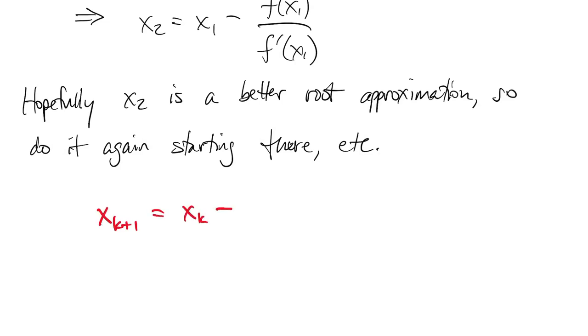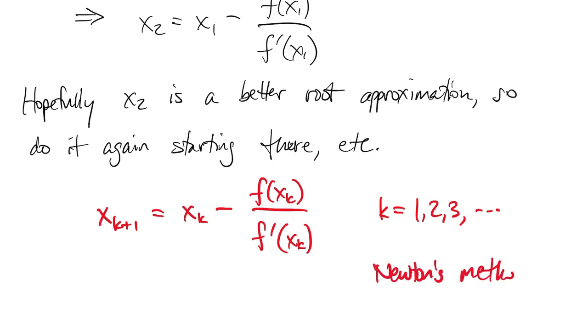Now we get an iteration that goes as long as we want. We could write that the next iteration, the next value, is equal to the current value minus f of the current value over f prime of the current value. That's Newton's method for finding a root.